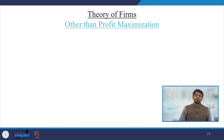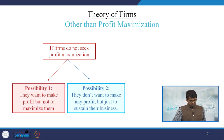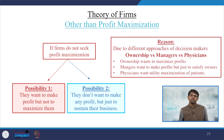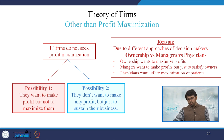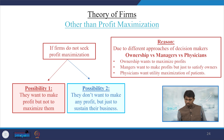Beyond profit maximization, if firms do not seek profit, there are two possibilities: they want to make profit but not maximize it, or they do not want any profit but just want to sustain. This is due to different decision-maker approaches — the principal-agent problem. Ownership wants to maximize profit; managers want to satisfy owners; physicians want to maximize patient utility. Hence non-profit maximization strategies are adopted.